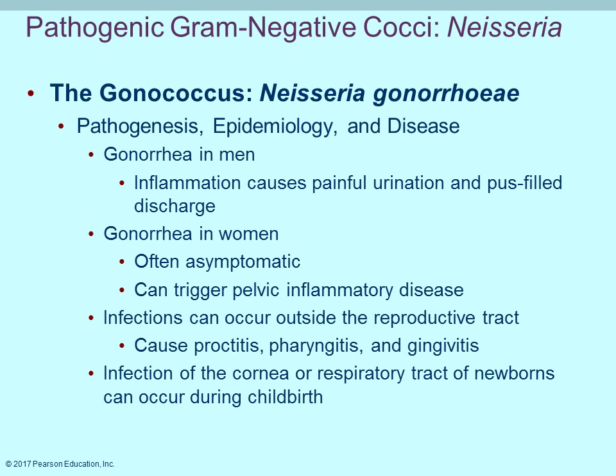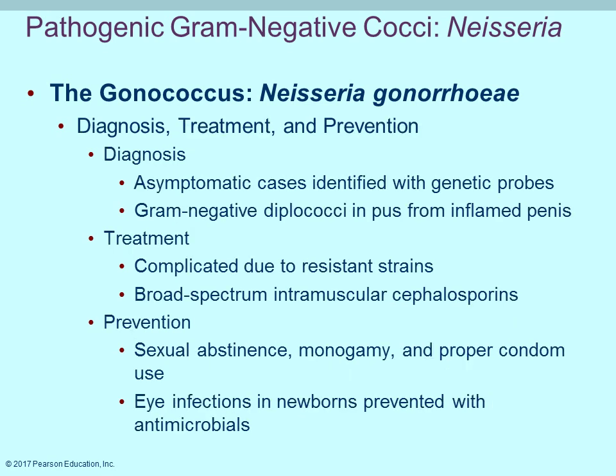In men, gonorrhea is more easily detected and usually causes painful urination. Women are often asymptomatic and it can lead to pelvic inflammatory disease over time. Infection beyond the reproductive system is possible — including cornea and respiratory tract — and is a concern for newborns if the mother is infected during childbirth. Diagnosis uses genetic probes. A growing concern is resistant strains. Prevention includes sexual abstinence, proper condom use, and one partner. Antibiotics can be given to newborns to prevent eye infections.